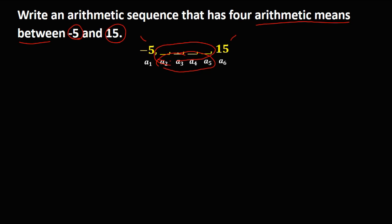Now to solve this problem, we're going to use the formula for the arithmetic sequence: a sub n equals a sub 1 plus n minus 1 times d.